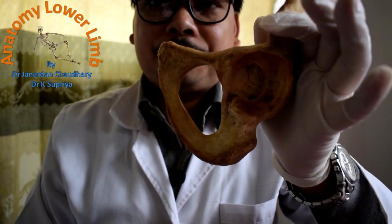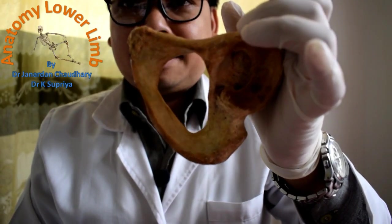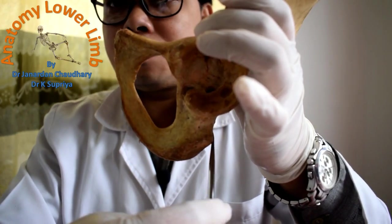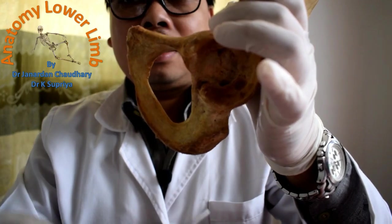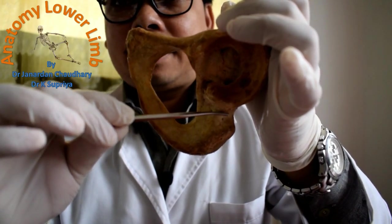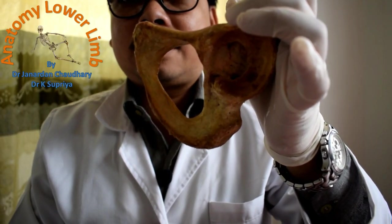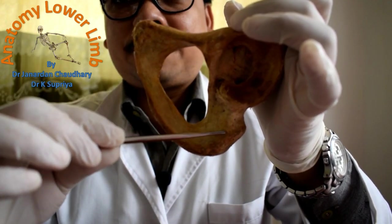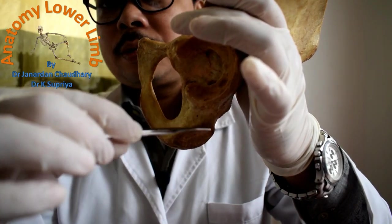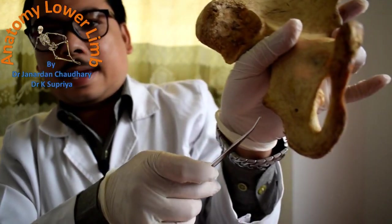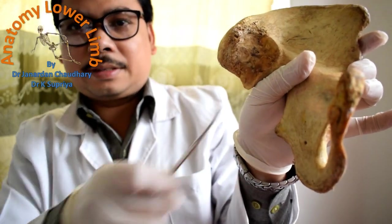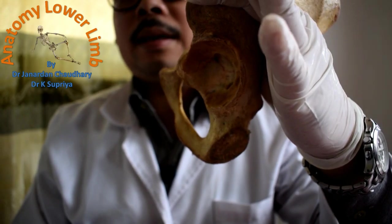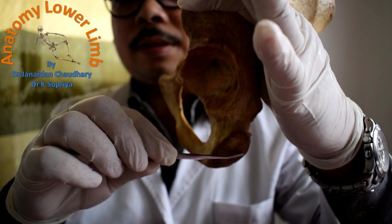The body of the ischium consists of an anterior border, a posterior border, and an ill-defined or blunt lateral border, which divide it into the femoral surface, dorsal surface, and pelvic surface. Let us first discuss the dorsal surface of the body of the ischium.